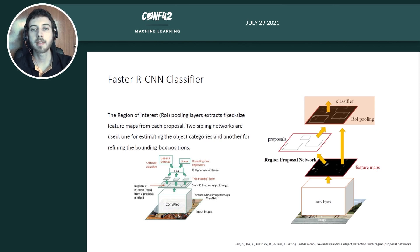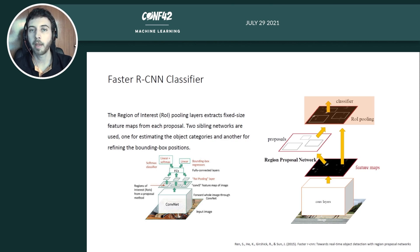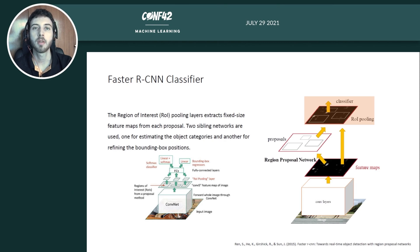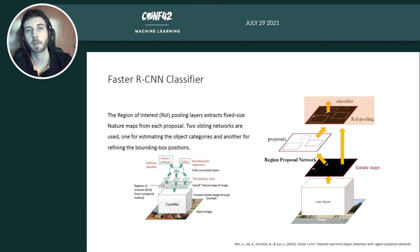Finally, we have a set of regions proposed by the region proposal network. We want to make this end-to-end and reuse the feature maps computed from the backbone. To do so, we map the feature maps to the proposals using a region of interest pooling layer that extracts fixed-size feature maps from each proposal. The reason they are fixed size is because we use a fully connected layer that expects fixed-size input. Then the classifier predicts the object class and bounding box coordinates.